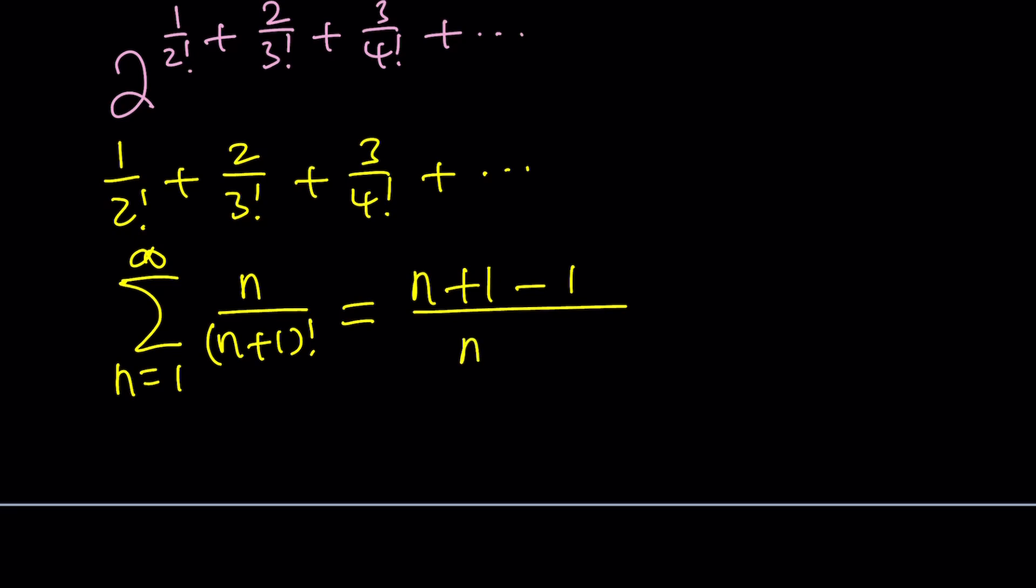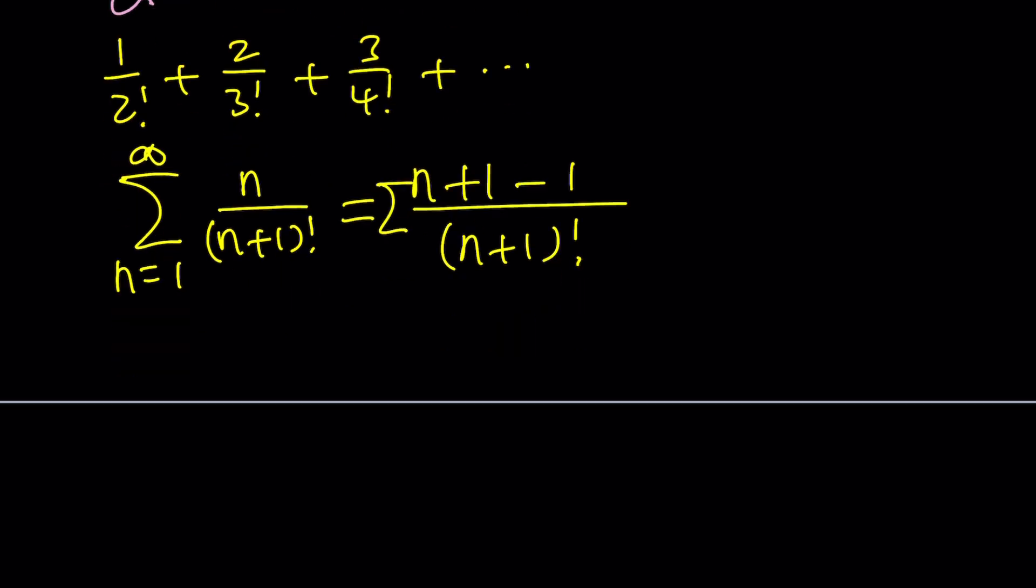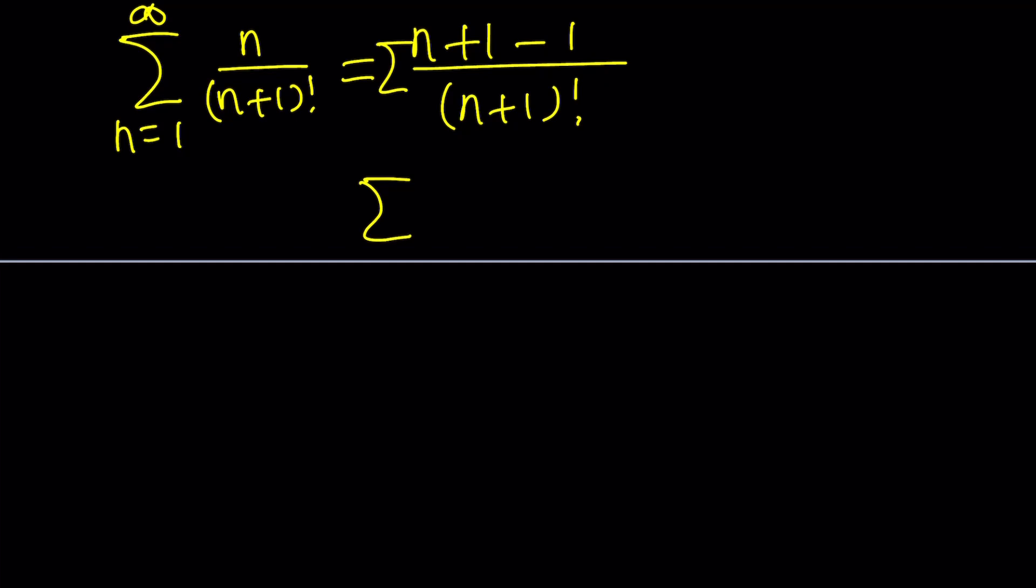Because when you do that, let me put the sigma real quick. Don't worry about the limits. They're all the same. But now, here's one thing we can do. We can basically write this as n plus 1 over n plus 1 factorial. And then minus 1 over n plus 1 factorial. And this is just awesome. You know why? Because now, this turns into a telescopic sum.